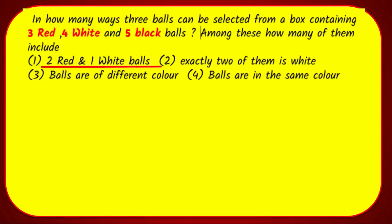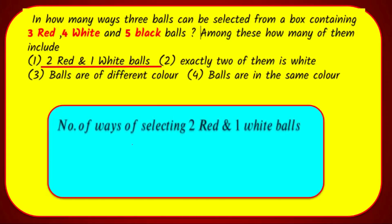First sub-question: In how many ways can we select 2 red and 1 white? We choose 2 red from 3 red balls, and 1 white from 4 white balls. That is 3C2 into 4C1, which equals 3 × 4 = 12 ways.